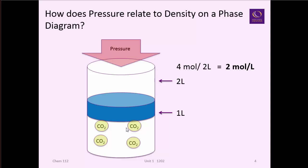Now we're to a one liter volume, so if we did the calculation, four moles divided by one liter, you have a four mole per liter density. The result from that is that density increases with pressure, and that's generally true with gases.